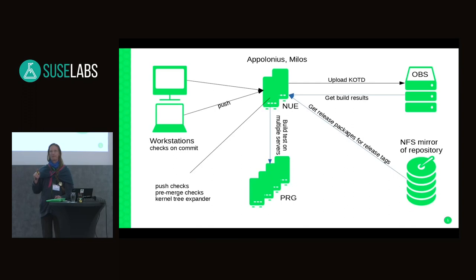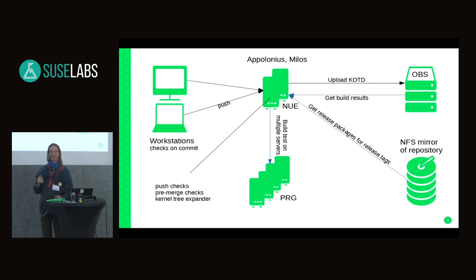When the checks pass, it sends an email to the branch maintainer that your branch passed tests and they merge it. Once the branch is updated, it's uploaded to OBS. Results from building in OBS are sent to the mailing list and to the maintainers.